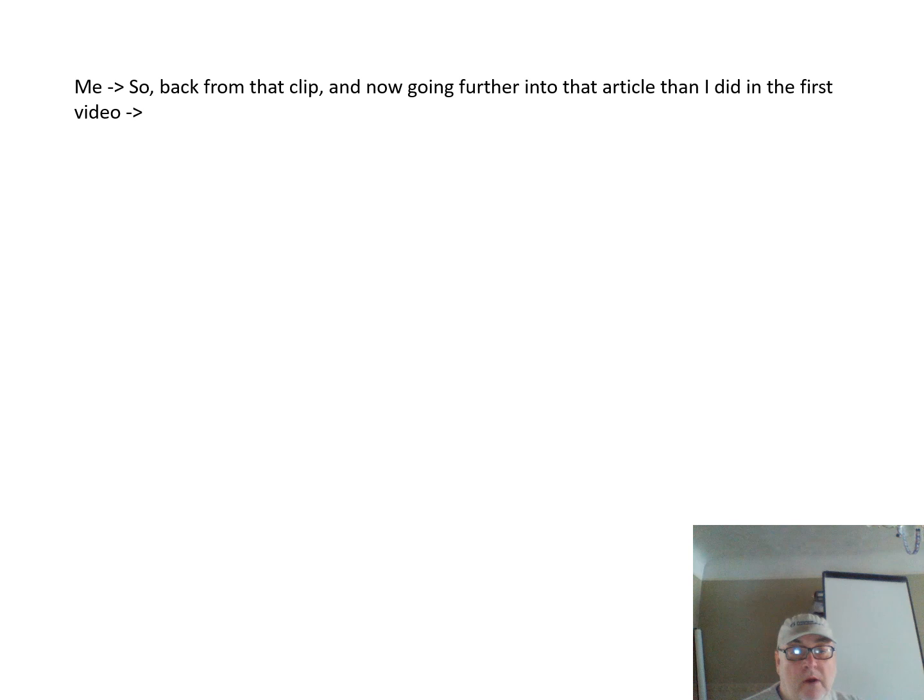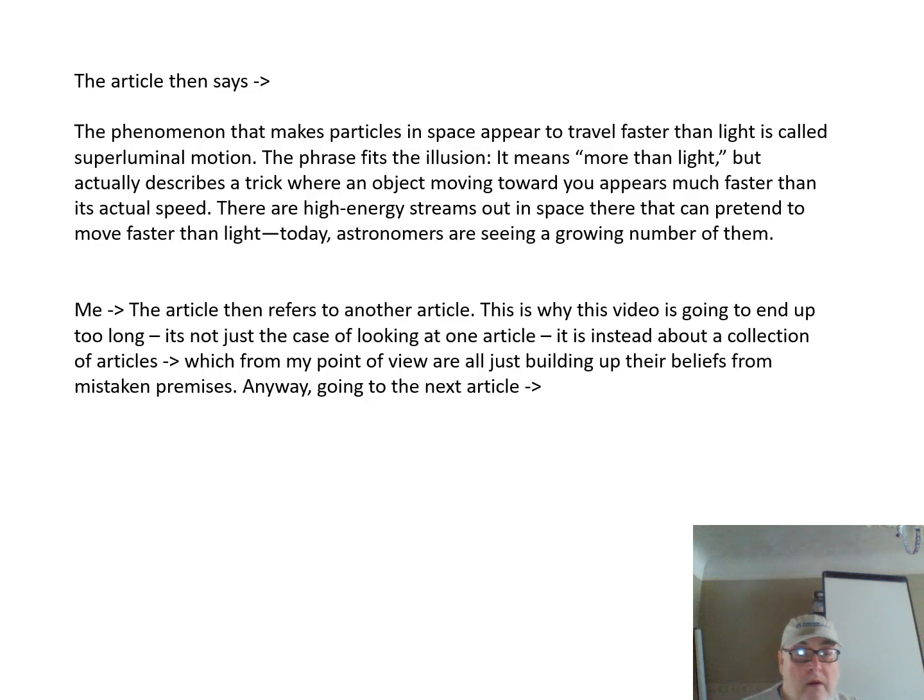So back from that clip and going further into that article than I did in the first video. The article then says the phenomenon that makes particles of space appear to travel faster than light is called superluminal motion. The phrase fits the illusion. It means more than light, but actually describes a trick where an object moving towards you appears much faster than its actual speed. There are high energy streams out in space that can pretend to move faster than light. Today astronomers are seeing a growing number of them.